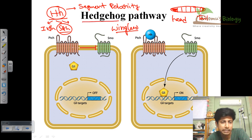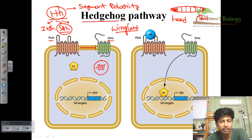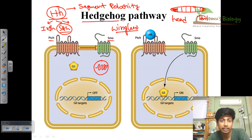One protein is called Patch and the other is called Smoothen. Smoothen is not embedded in the membrane directly — it is inside a vesicle in the cytosol. Patch is a multipass protein embedded in the membrane. Normally, when signaling is not activated by any hedgehog protein outside, Patch is present but no signal is received by the target genes, which are called the GLI target genes.